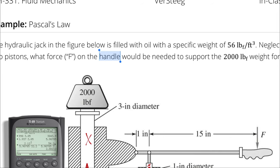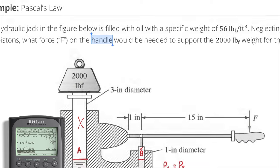A is 3 inches, so I can write this as 1 divided by 3, quantity squared, times 2,000, and I get 2,000 divided by 9, which equals 222.222 pounds of force.